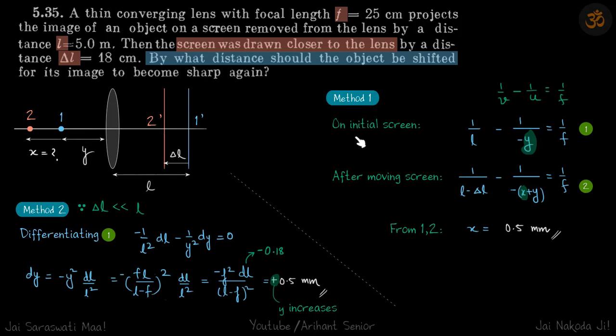Let's solve it with two methods. So first is the brute method, where we'll just find out the position, the final position and the initial position, and just subtract the difference. So 1/v - 1/u = 1/f. On initial screen, when the object is here at distance y, so 1/l, so v is l, and -1/u, so u is -y, is equal to 1/f.